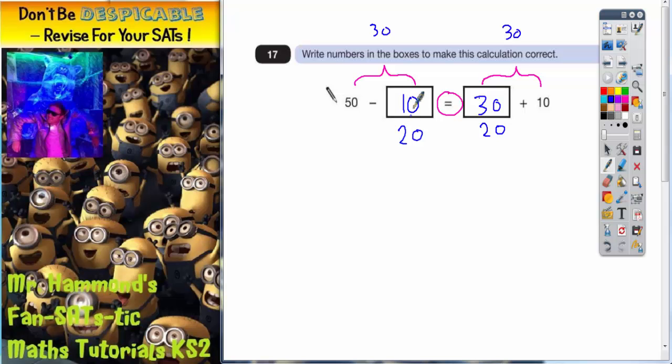So whatever number you put in the left hand side, you then got to work out what the answer to that side is and use that answer to make the right hand side balance up. Let's do a couple more. Let's just pick a random number. Let's say 7.